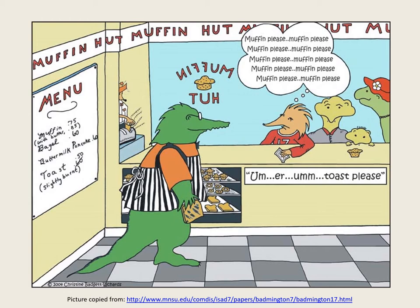When we want to communicate something to someone, before we start to speak our brains spontaneously create a speech plan — a sort of program that contains information needed to communicate whatever it is we want to say. Speech plans specify which words to use, the order in which those words are to be spoken, the stress and intonation patterns for those words, and the muscle movements required to produce them. Our brains are constantly creating speech plans and at any one time there will be more than one plan being created.